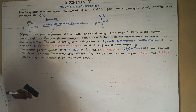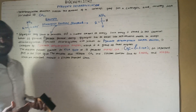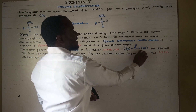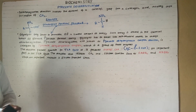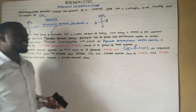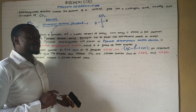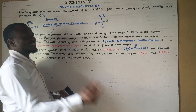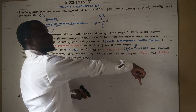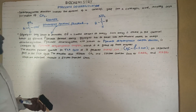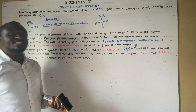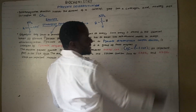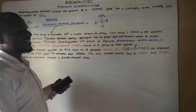The reaction prepares for the TCA cycle because it produces acetyl-CoA, which is used as a fuel in the TCA cycle. The reaction also releases carbon dioxide and produces important coenzymes in the reduced form that are used in the electron transport chain.